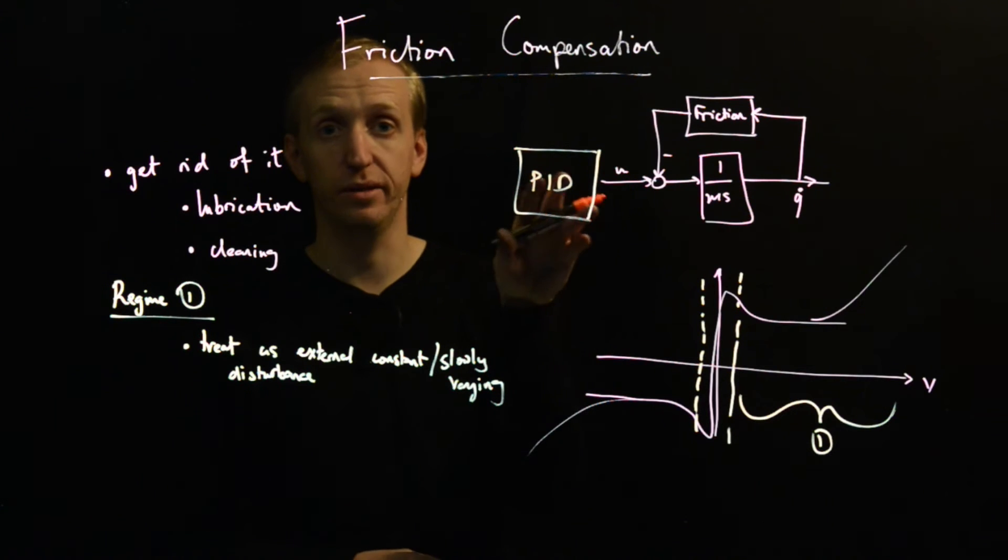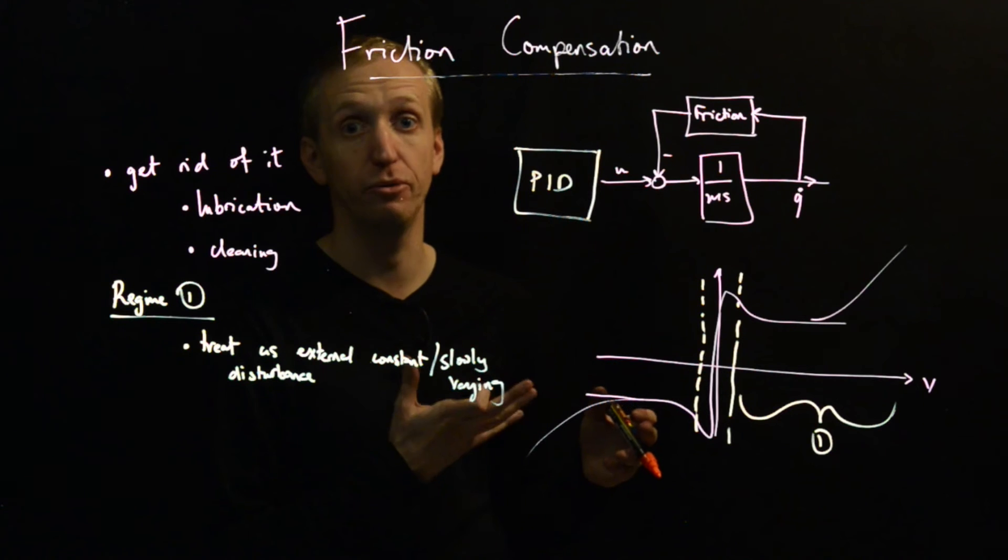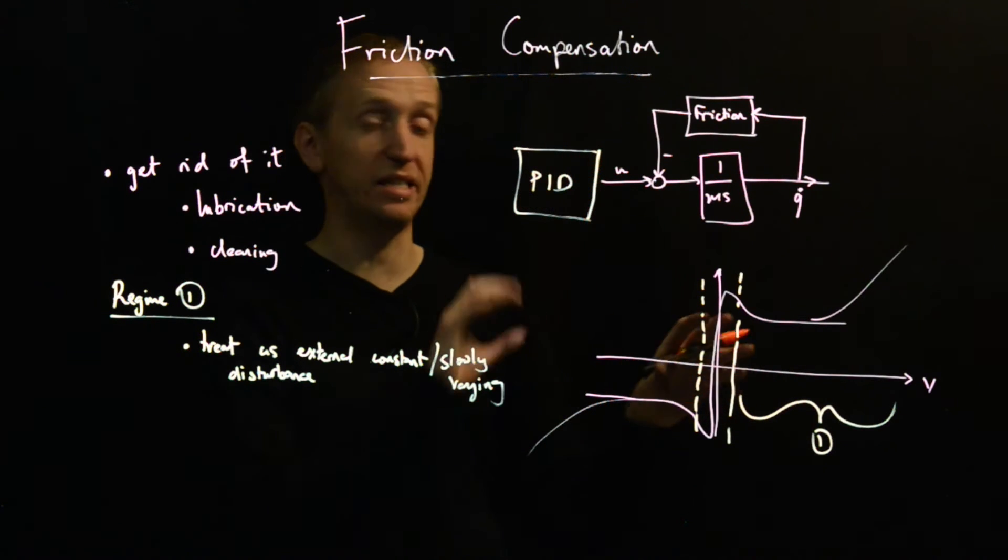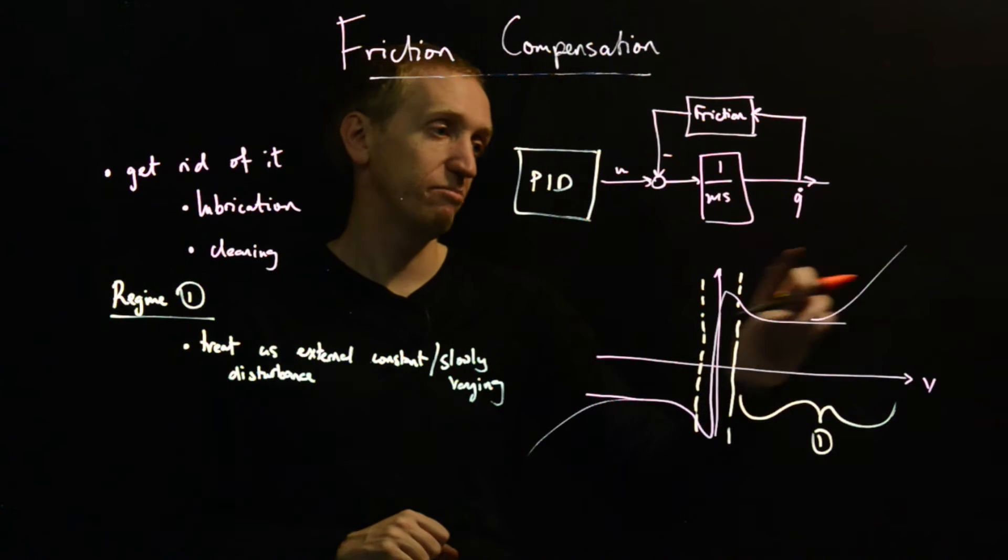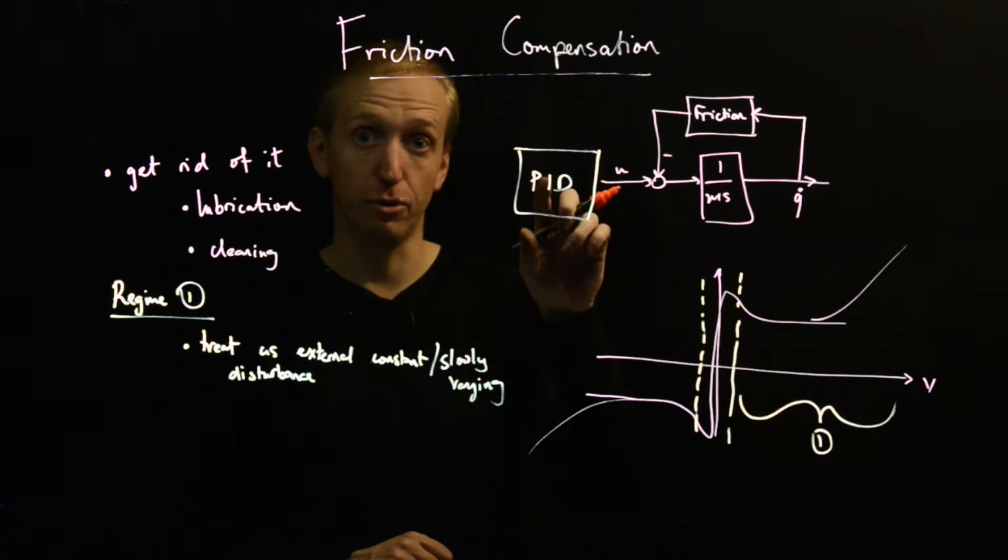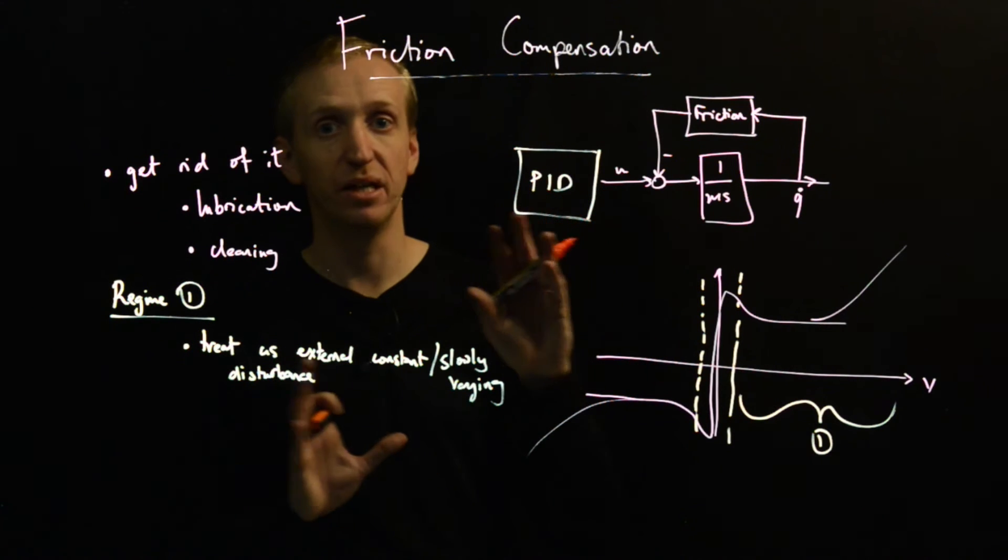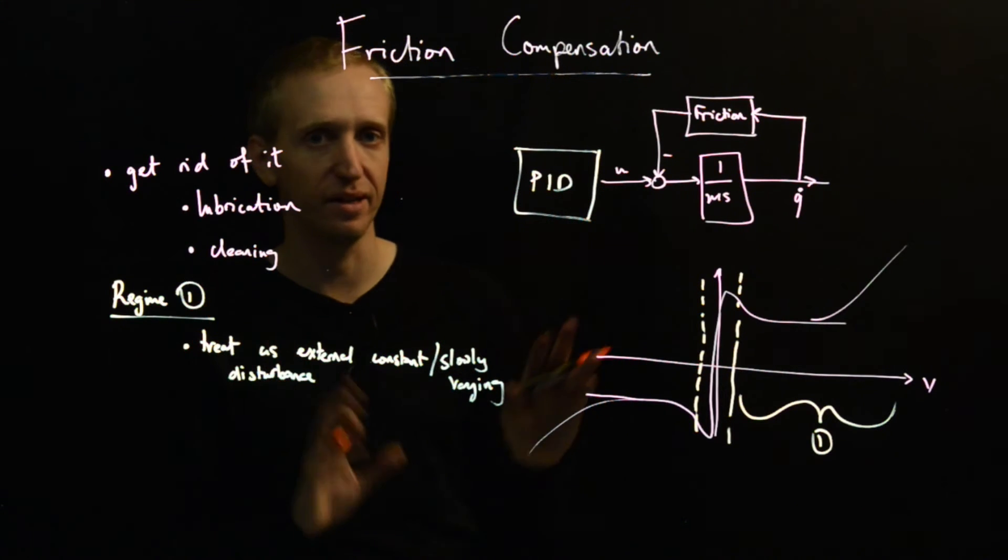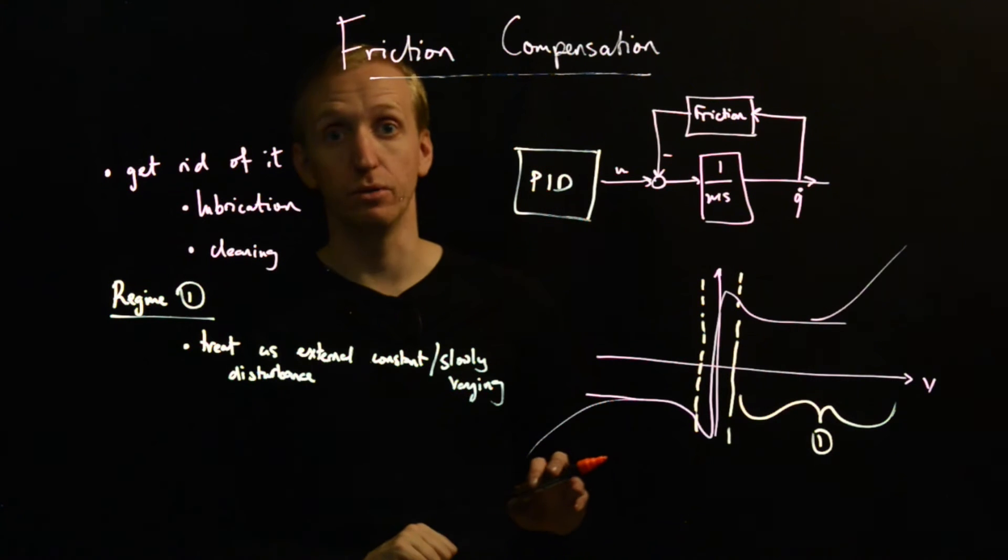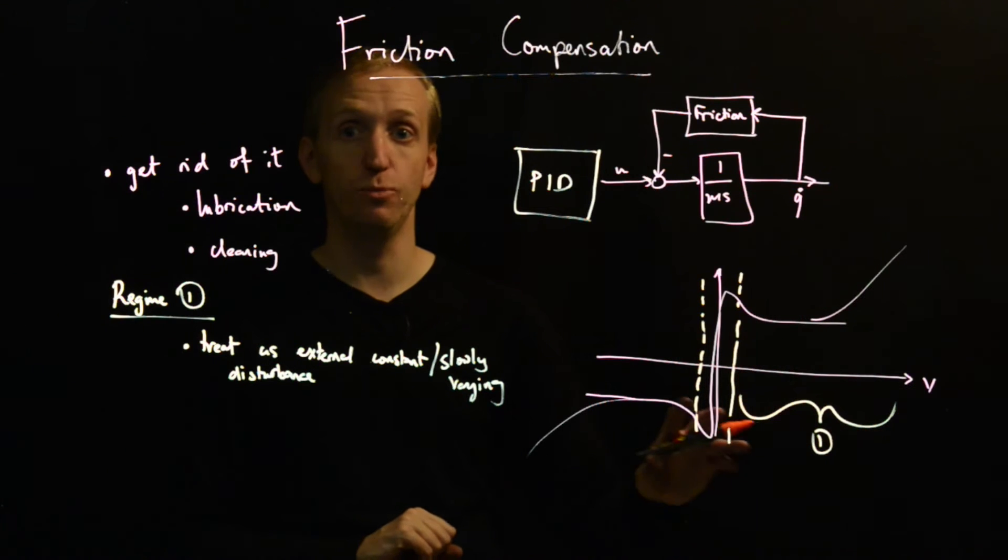A very good way to start to deal with friction uncertainty in this regime is to use integral action. We've got a few extra details in the lecture notes for maybe slight modifications in how you would implement your integral action. But this is the general idea: in this regime, we have some friction disturbance, it's not changing that much, and integral action is a good control technique for eliminating constant unknown disturbances.